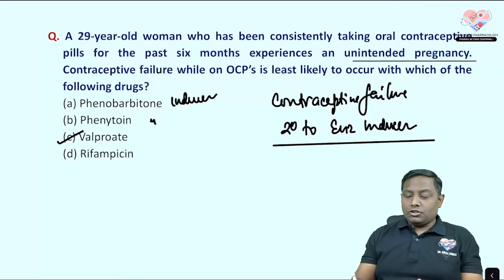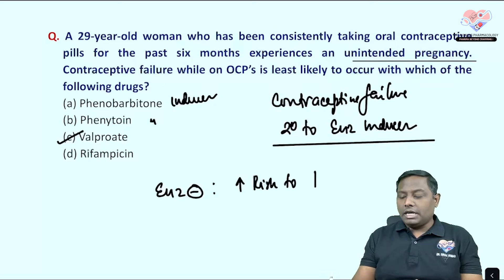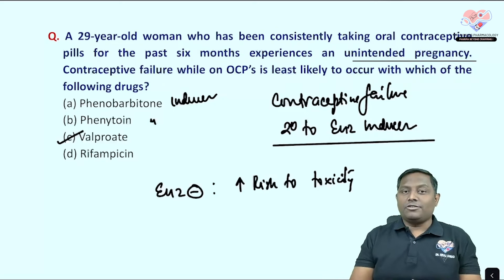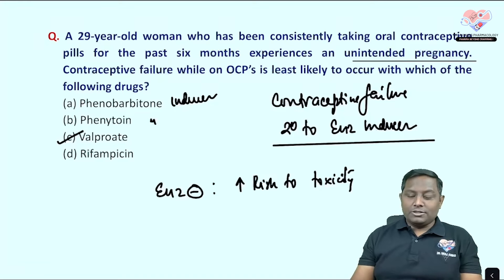Remember: enzyme inhibitors increase the risk of drug toxicity, and enzyme inducers increase the risk of drug failure. Since the examiner asks which drug is least likely to cause contraceptive failure, valproate (an inhibitor) is the correct answer — option C.